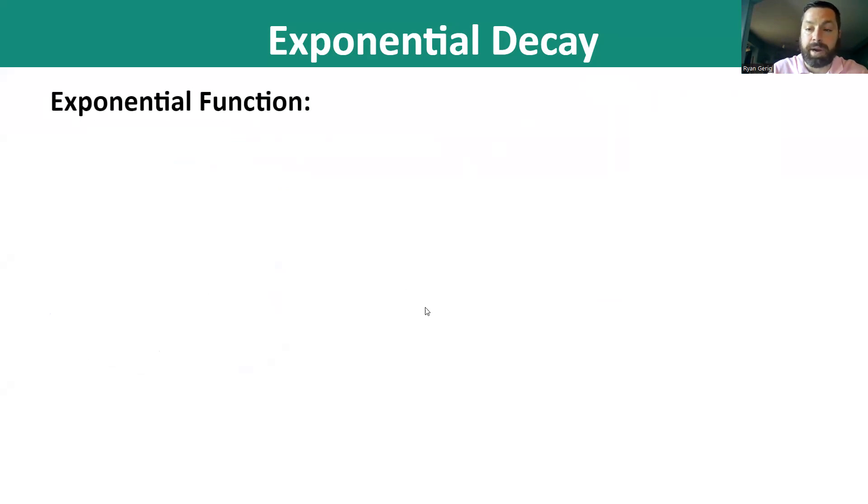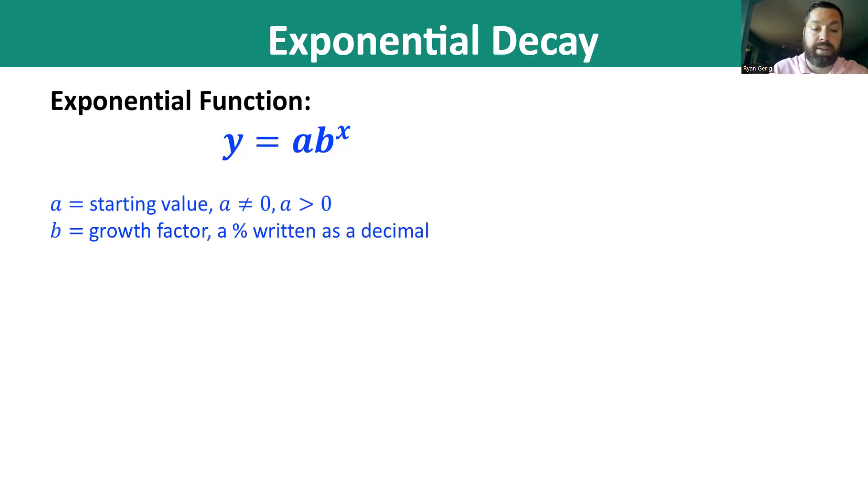An exponential function, just a reminder, is y equals ab to the x. a is the starting value. a cannot be zero, and a has to be positive. b is the growth factor, or in this case, the decay factor, which is a percent written as a decimal.